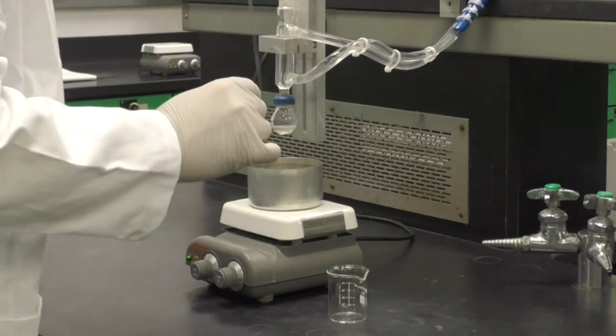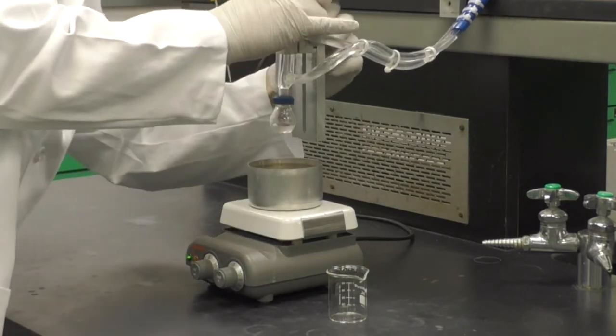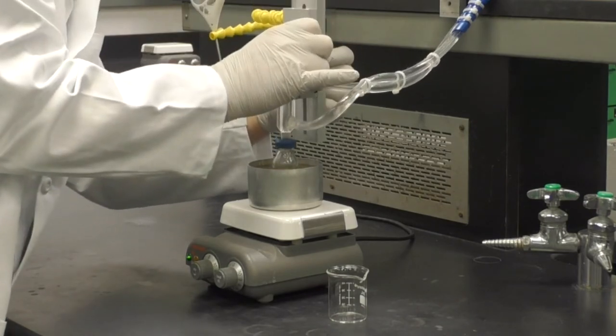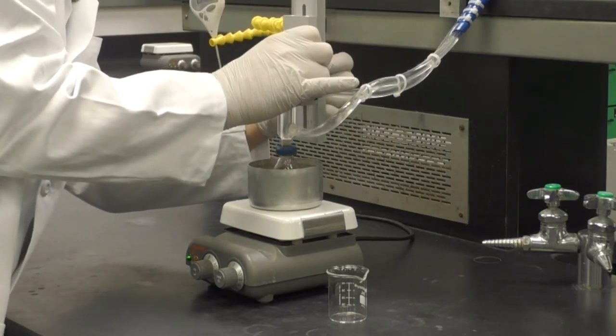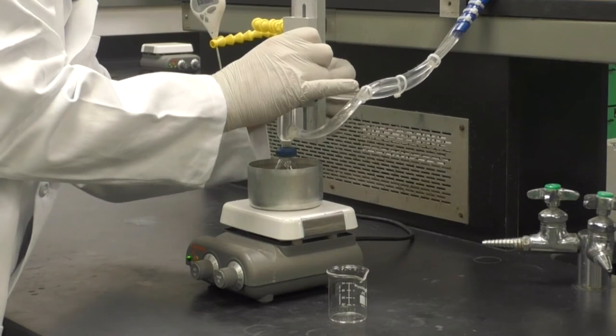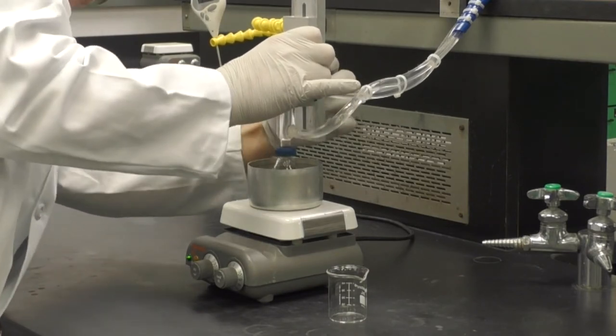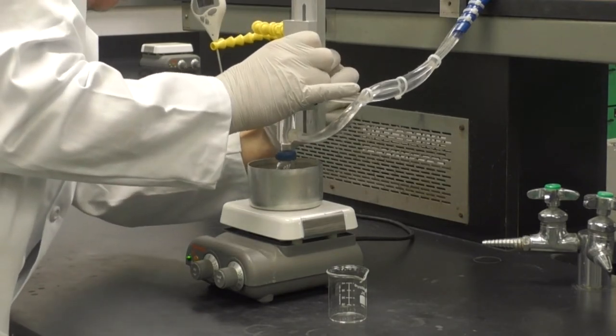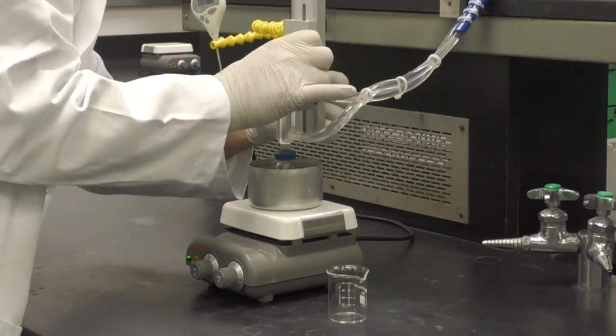Loosen the wing nut on the back side of the condenser's metal support so you can move the condenser up and down. Submerge about two thirds of the flask in the water bath. Tighten the wing nut so it is just snug. There is no need to over tighten.